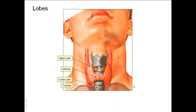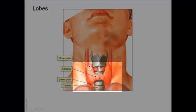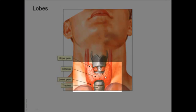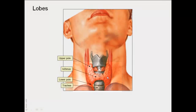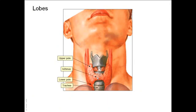There are two lobes, and these two lobes are united in front of the trachea — specifically in front of the second, third, and fourth tracheal rings — by an isthmus, or a narrow part of thyroid tissue. Each lobe is spear-shaped, with a narrow upper pole and a broader lower pole.